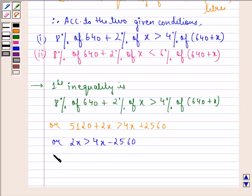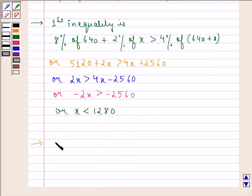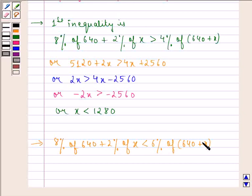Now the second inequality is 8% of 640 plus 2% of x is strictly less than 6% of 640 plus x, or 8 into 6.40 plus 0.02 of x is strictly less than 0.06 into 640 plus x.